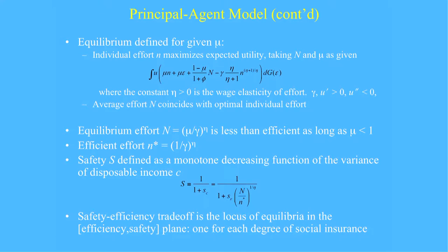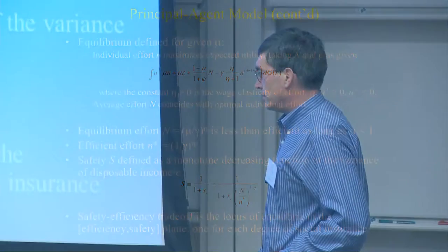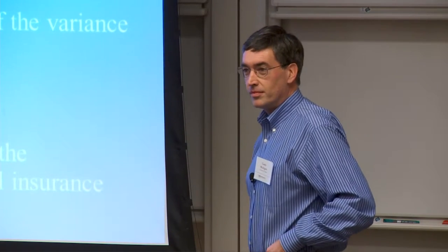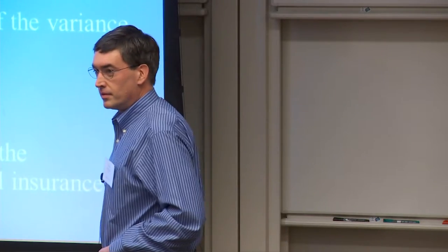I'm going to define safety to be the inverse of uncertainty about your disposable income. S_C is the standard deviation of a person's disposable income, zero or larger. I define safety as the inverse of that. That standard deviation is an equilibrium result based on the degree of social insurance. S epsilon is the standard deviation of that private information shock. It's just one period.